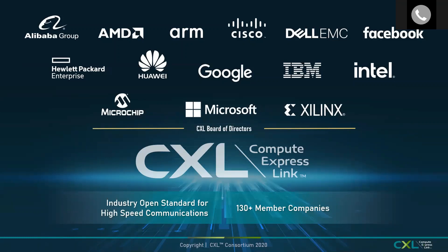Adopter-class members get IP protection rights from the CXL Consortium when implementing. We recommend joining at the adopter level or higher. We have five different technical work groups, and contributors can join those work groups to influence the 3.0 and beyond specifications. This is an open specification driven by the industry.